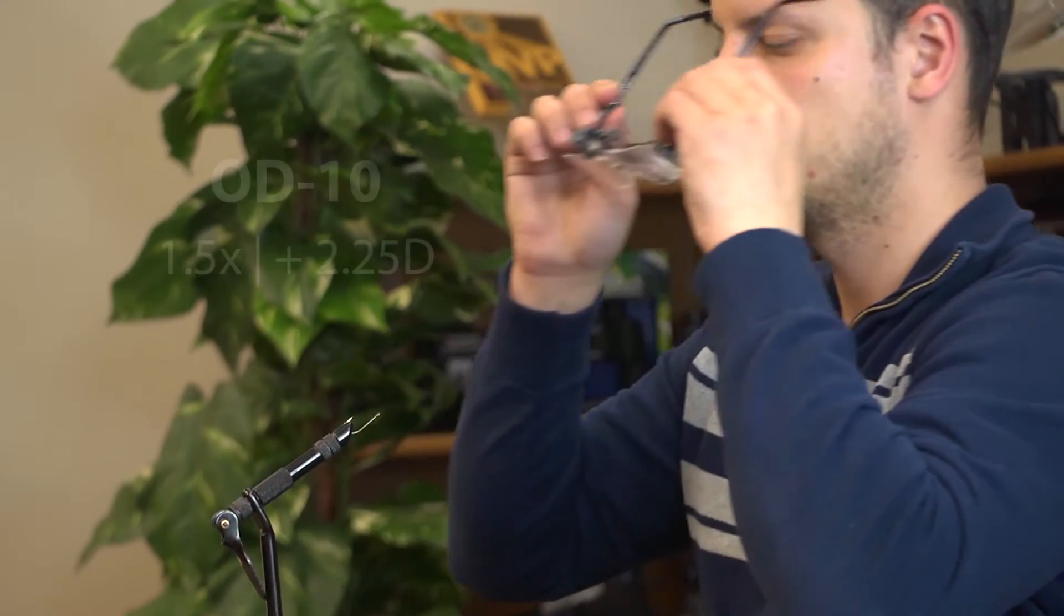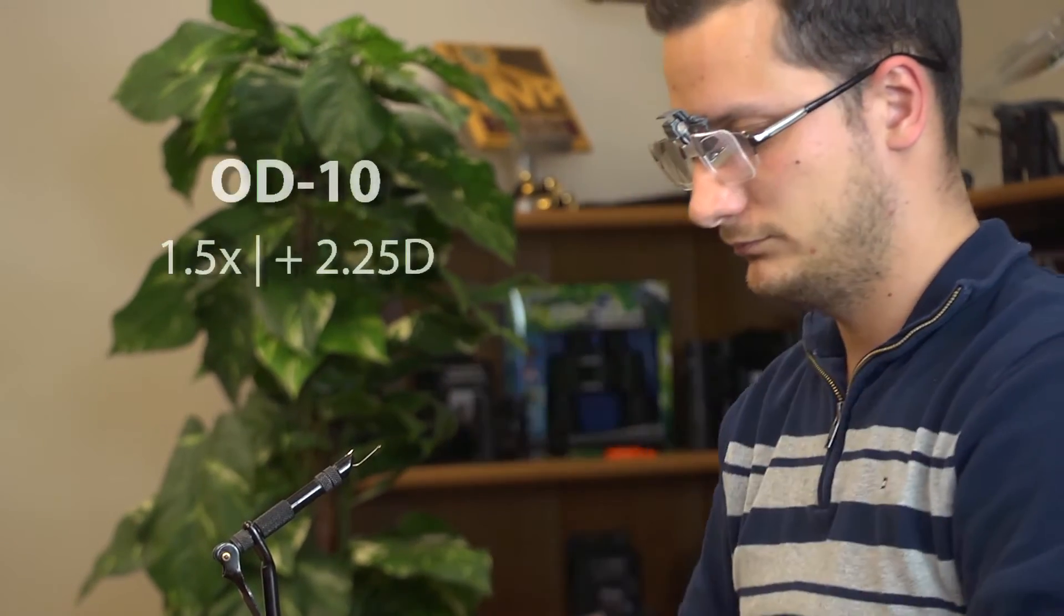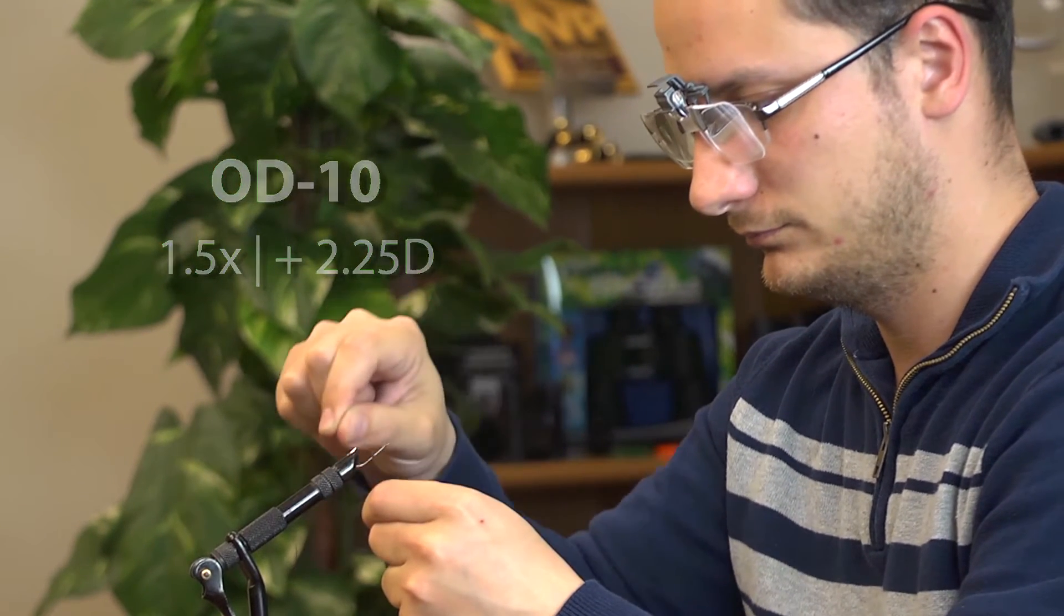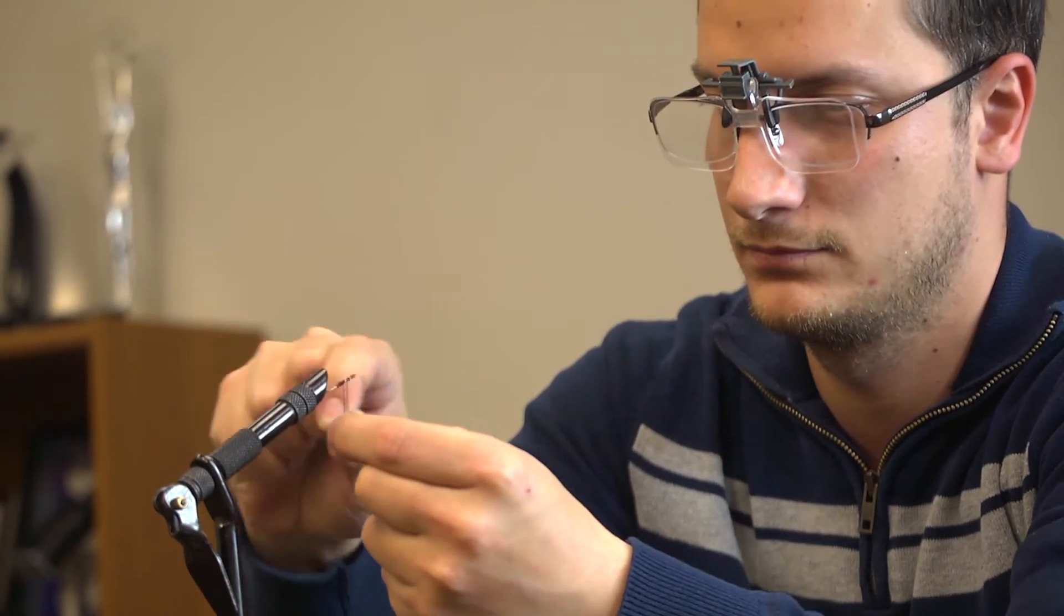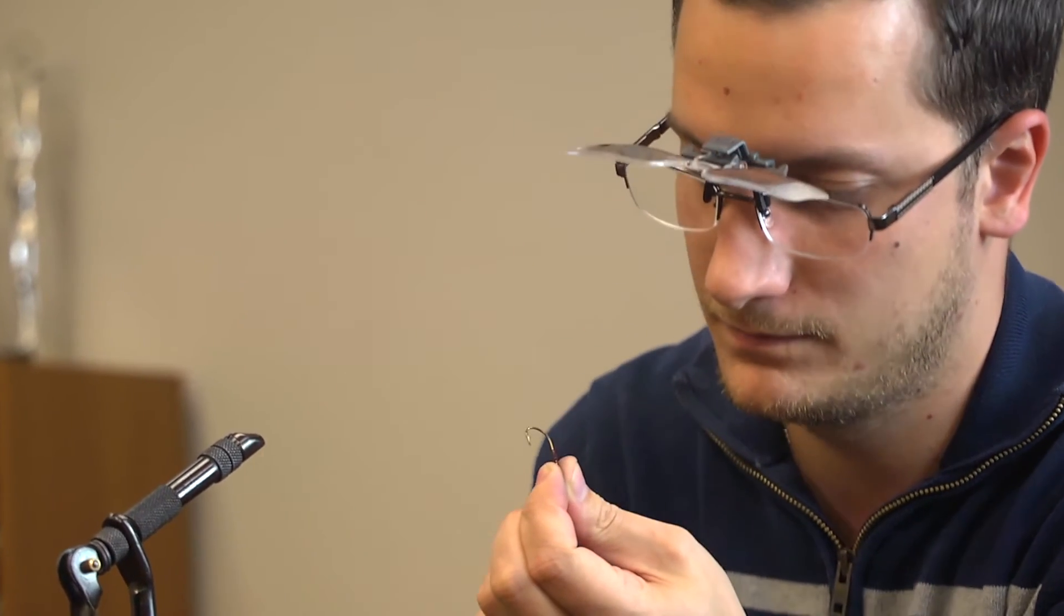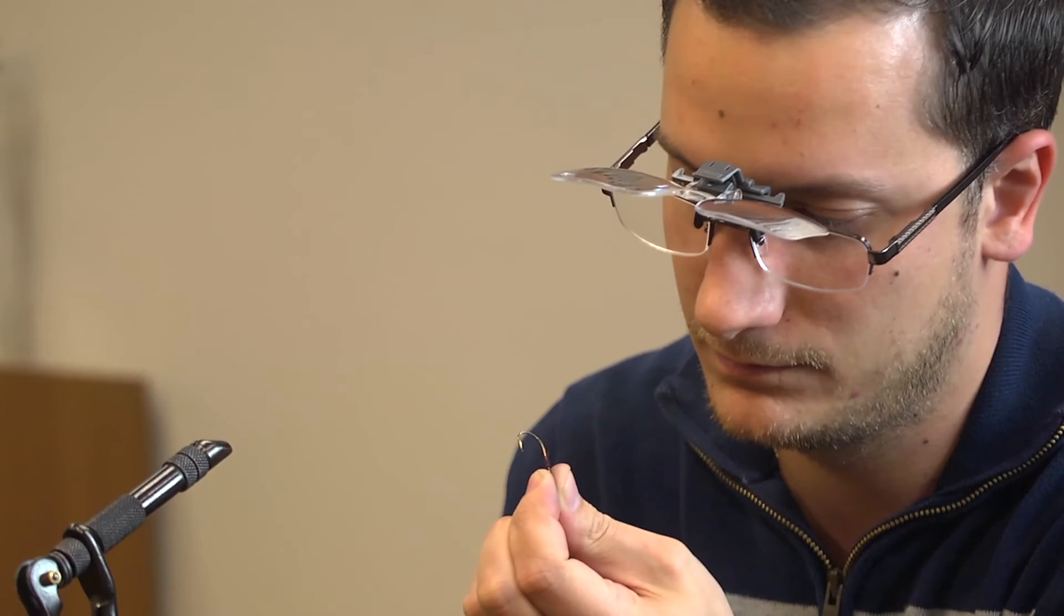The OD10 transforms your glasses into a 1.5x power magnifier and will be very easy to focus. A lot of people use the clip and flips for tying flies, because with these you can get a sharp focus on small details without having to sacrifice your hands. The lenses also flip up so you can remove the extra magnification without having to remove your glasses.